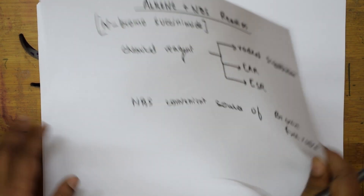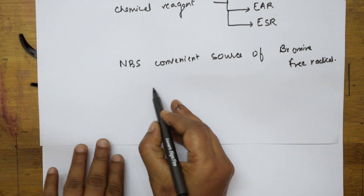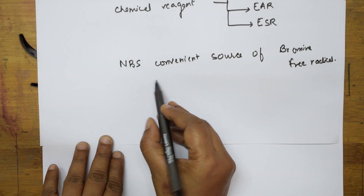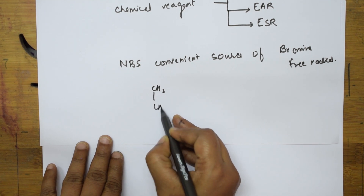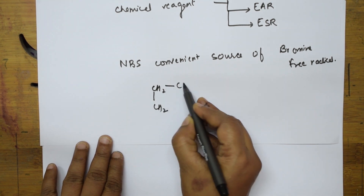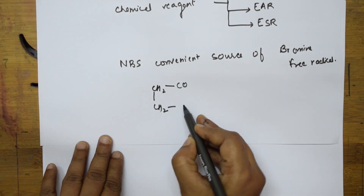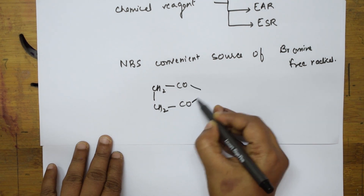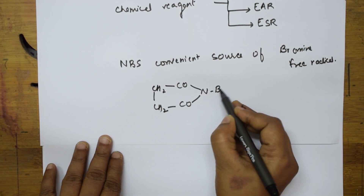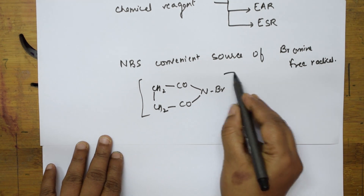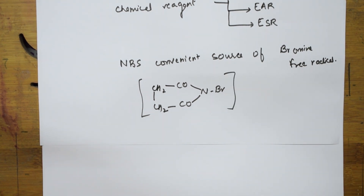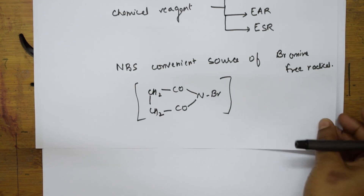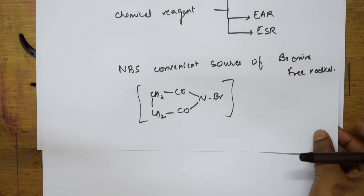What is the formula of NBS? Basically, NBS looks like this: CH2 linked to one more CH2, then CO, again CO, N-Br. This is NBS — N-bromosuccinamide.